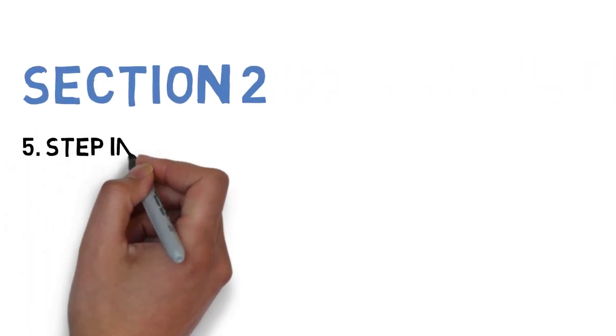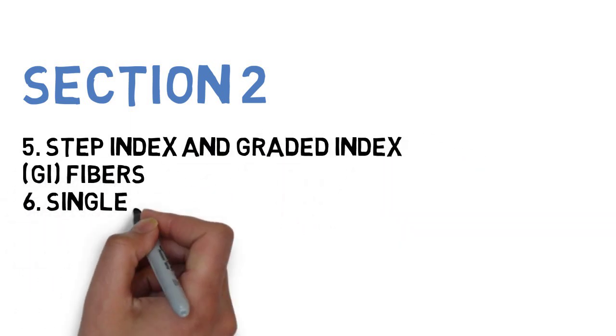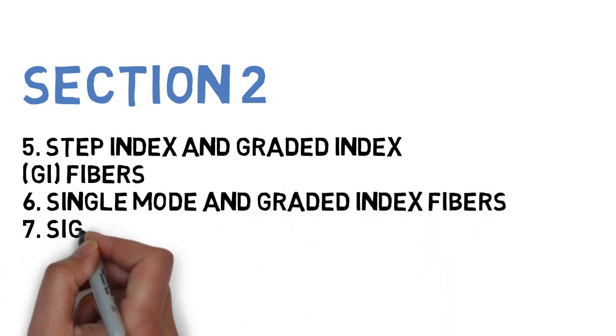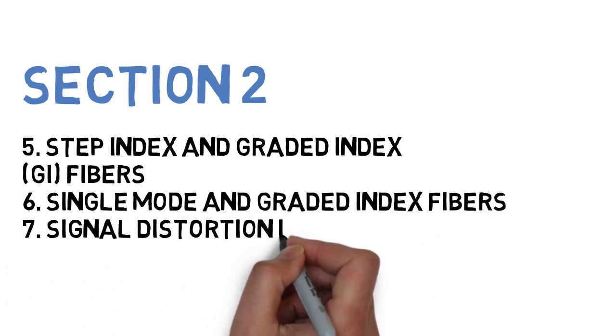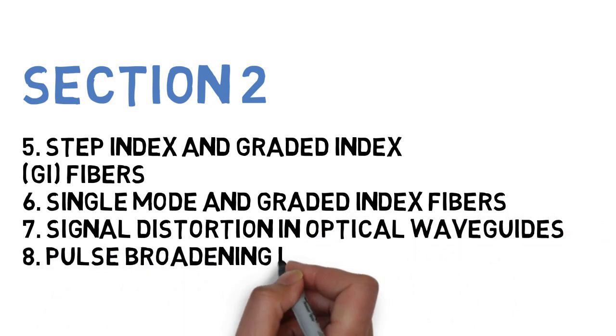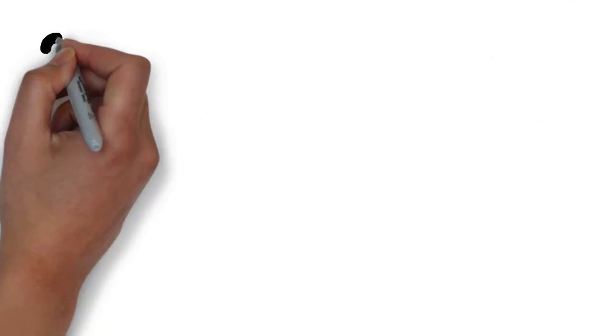Let's go to section two, wherein the first is step index and graded index fibers, next is single mode and graded index fibers, next is signal distortion and optical waveguides, and the last one for this section is pulse broadening in graded index fiber. These are the eight questions that you need to do in section one and section two.